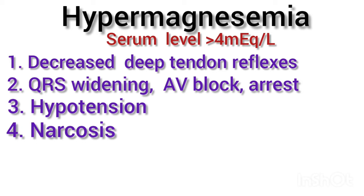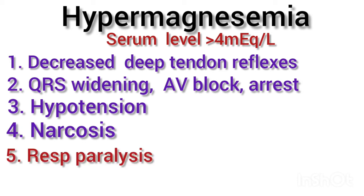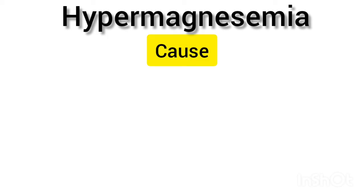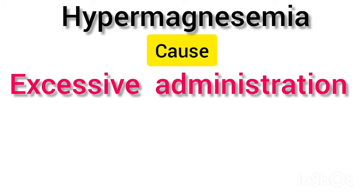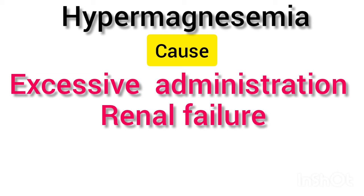Hypotension is common, as well as narcosis and respiratory depression from paralysis of the muscles of respiration, mainly the diaphragm. Hypermagnesemia is most commonly seen in excessive administration of magnesium for therapeutic purposes — for example, in the treatment of preeclampsia or eclampsia — or in renal failure where excretion is impaired.